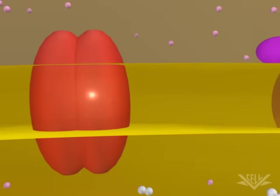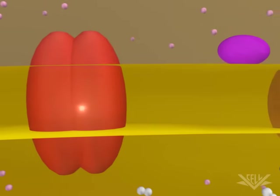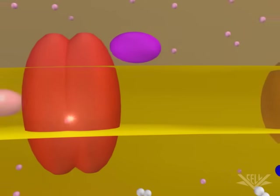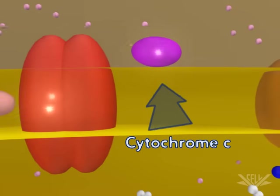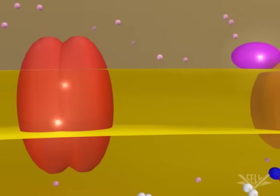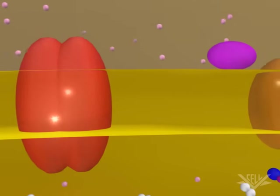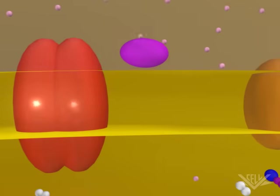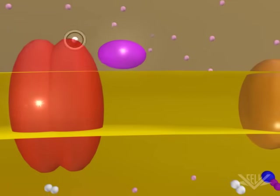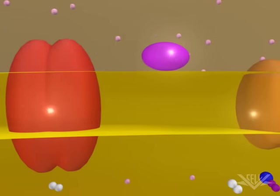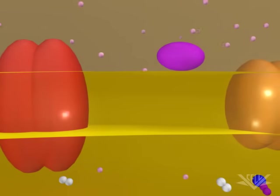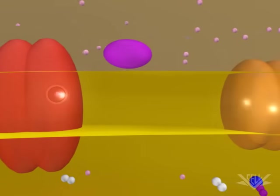Ubiquinone is called a mobile transfer molecule because it moves the electrons to the cytochrome BC1 complex. Each electron is then passed from the cytochrome BC1 complex to cytochrome C. Cytochrome C accepts each electron one at a time, and one hydrogen ion is pumped through the complex as each electron is transferred.